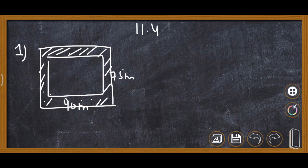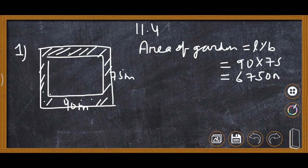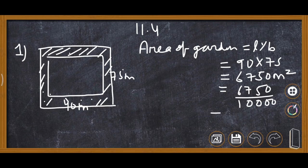First of all we will find the area of the garden. The formula is length into breadth. Length is 90, breadth is 75, so the area is 6750 meter square. In hectares, we divide by 10,000 — since one hectare equals 10,000 meter square — giving 0.675 hectare.